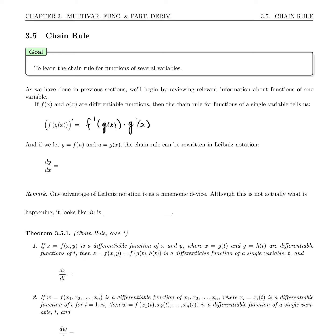And if we let y equal f of u and u equal g of x, the chain rule can be rewritten in Leibniz notation: dy/dx is dy/du times du/dx.